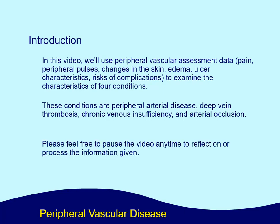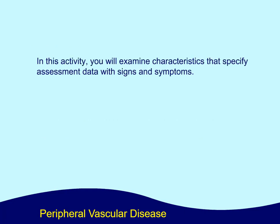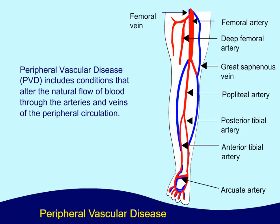Please feel free to pause the video to reflect on or process the information given. In this activity, you will examine characteristics that specify assessment data with signs and symptoms. Peripheral Vascular Disease, or PVD, includes conditions that alter the natural flow of blood through the arteries and veins of the peripheral circulation.